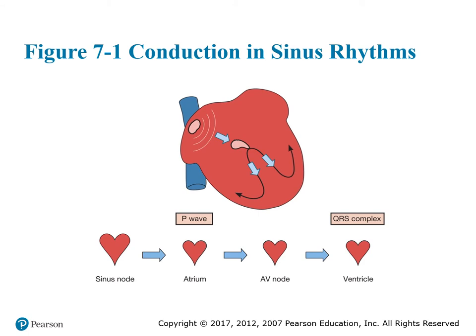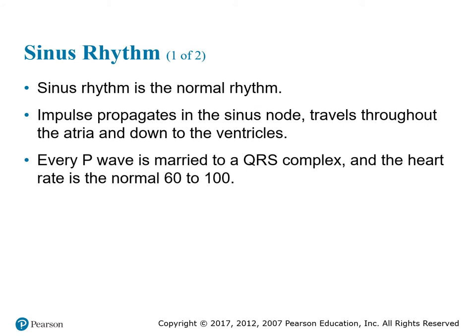The normal conduction of a sinus rhythm starts at the SA node, goes down to the atrium, down to the AV node, into the ventricles, producing your P wave and your QRS. Sinus rhythm is a normal rhythm where the impulse starts in the sinus node, travels through the atrium and down to the ventricle. Every P wave is married to a QRS complex, and the heart rate is normally anywhere from 60 to 100 beats per minute.